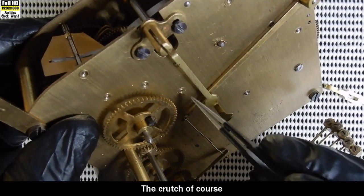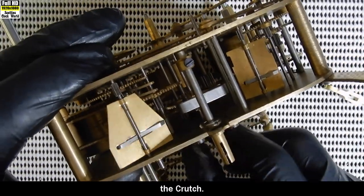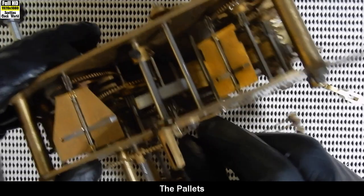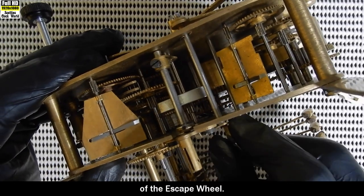The crutch, of course, attaches to the pallets there. That you can see when I move the crutch. The pallets are regulating the turning of the escape wheel.